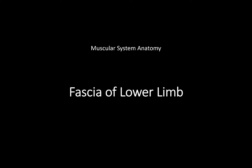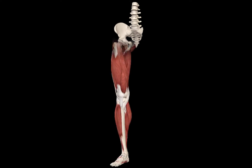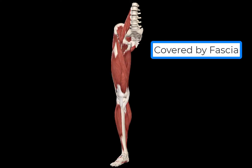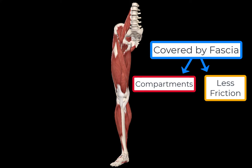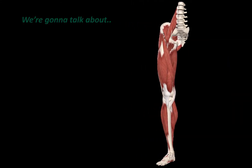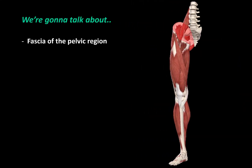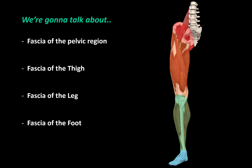What's up, Merite here. In this video, we're going to take a look at the main fascia covering the structures in the lower extremity. The lower limb is covered in muscles, and these muscles are covered by fascia separating them into compartments, as well as forming a smooth environment around the muscles for less friction during contraction. We're going to cover the fascia in the pelvic region, the fascia of the thigh, the fascia of the leg, and the fascia of the foot.